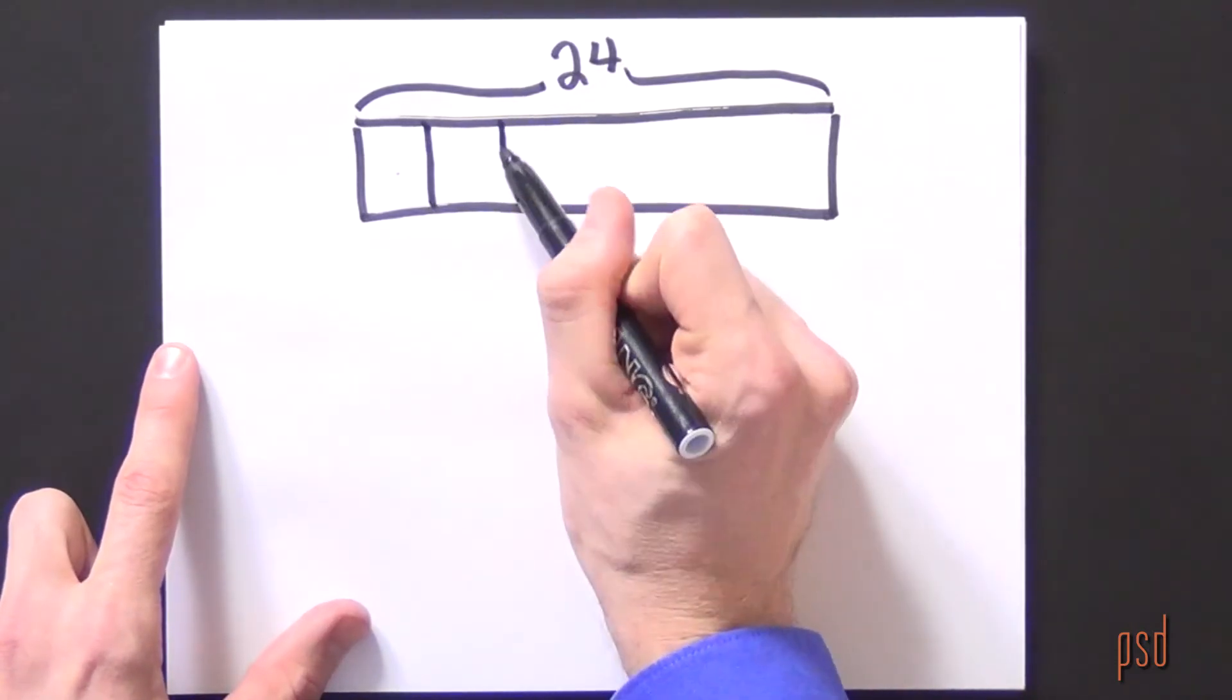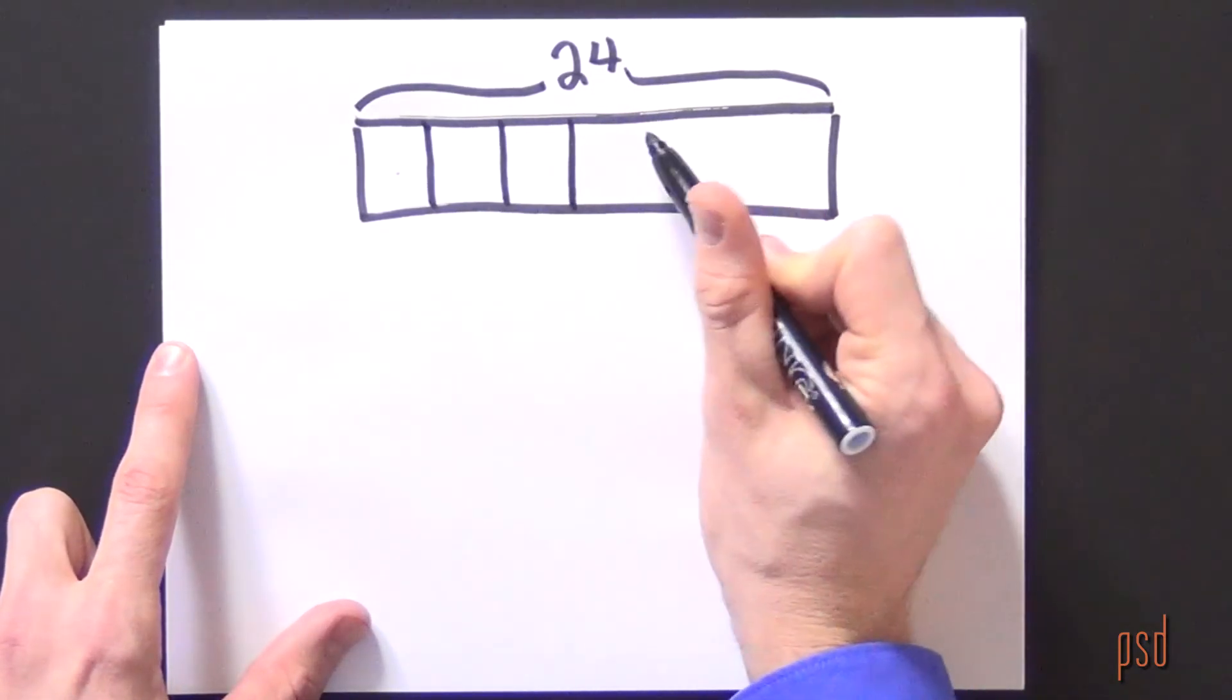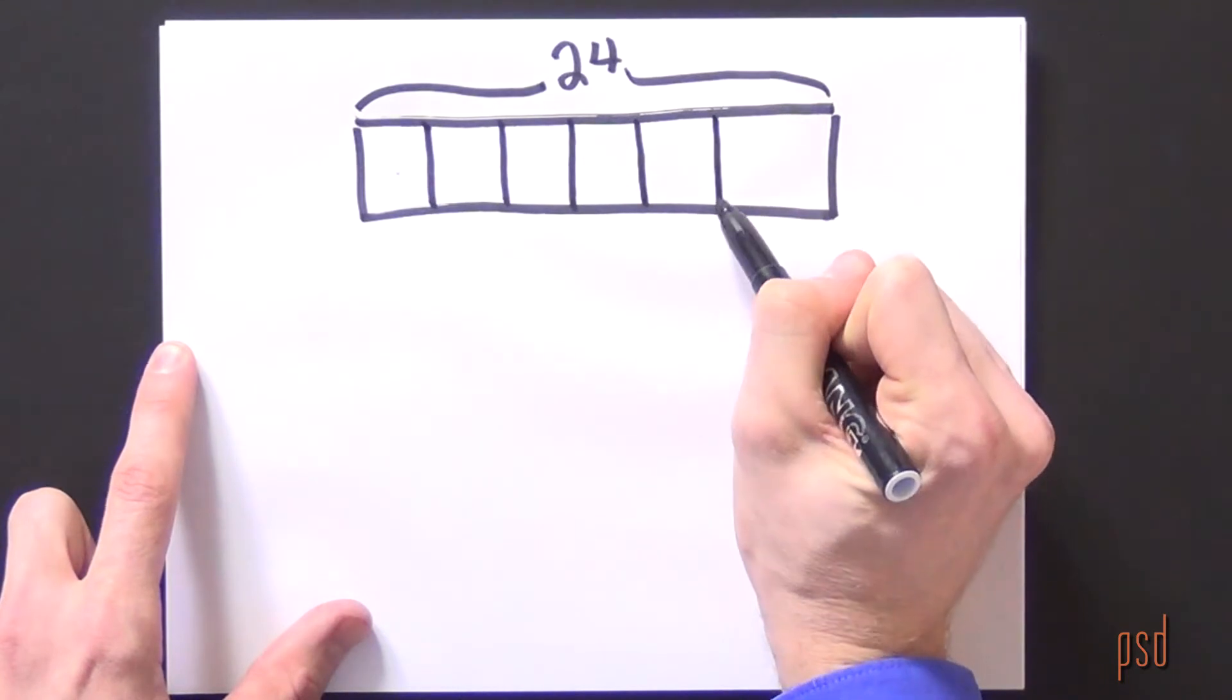I know in the problem that five-sixths of the plants are vegetables. This means that I need to partition my whole garden into sixths because the denominator indicates how many parts of equal size the whole is partitioned into. So I can divide my strip diagram into sixths.